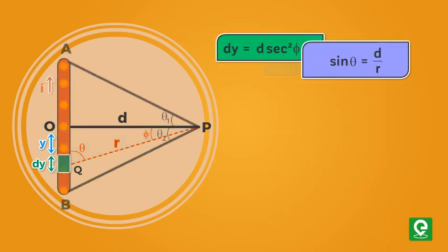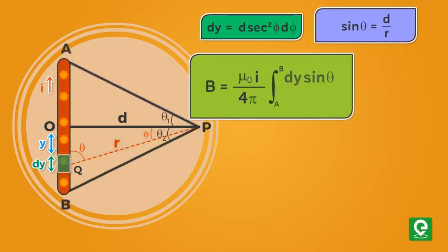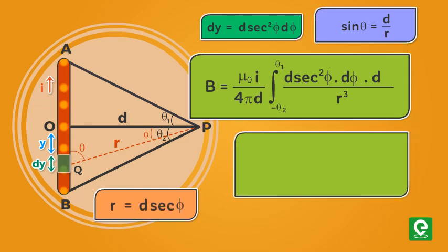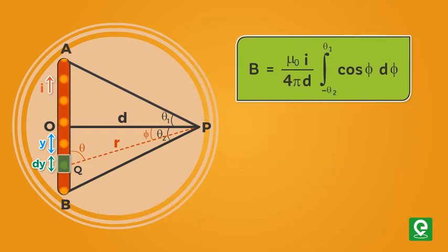Substituting this value in equation 1 we get B equal to mu naught I upon four pi d into integration from the limit theta 1 to theta 2 d phi. Solving this we get magnetic field due to straight current carrying wire.